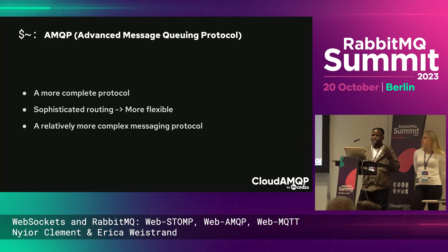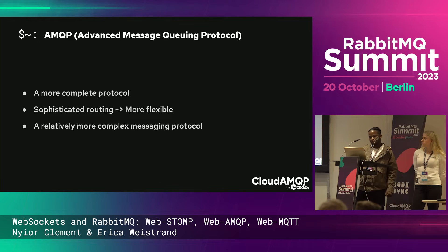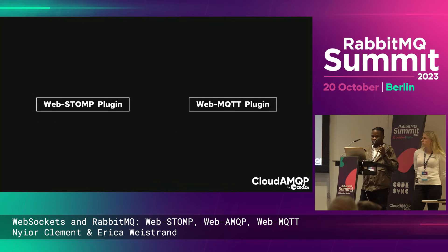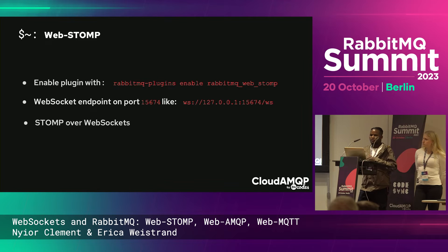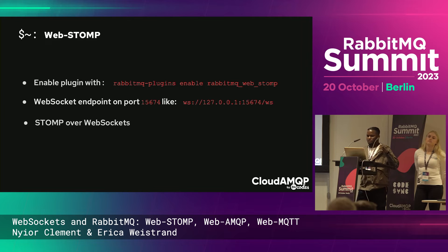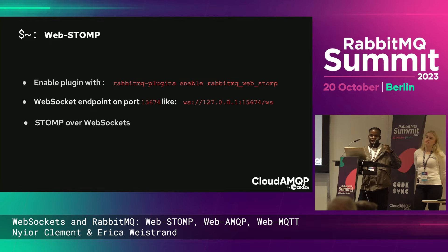Now that we have the basics of these protocols, we can move on to see how you can combine WebSockets with RabbitMQ. RabbitMQ supports two techniques out of the box: the WebSTOMP plugin and the WebMQTT plugin. With the WebSTOMP plugin, when you enable it, it exposes a WebSocket endpoint in your RabbitMQ node.